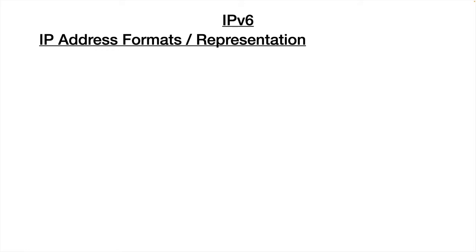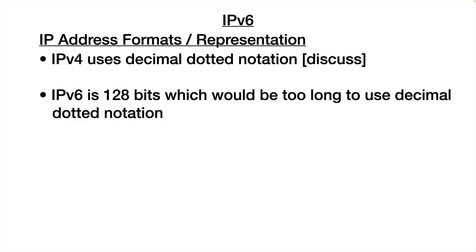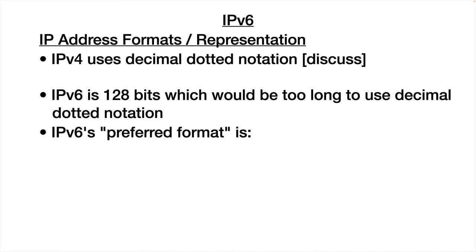As far as representing IP addresses, in IP version 4 we use dotted decimal notation. We take the 32 bits — 4 bytes — convert each byte into its decimal value, and put periods between them. With IP version 6, we have 128 bits, and that would be way too long for dotted decimal notation — we would have 32 numbers separated by periods instead of 4, so that's just not practical.